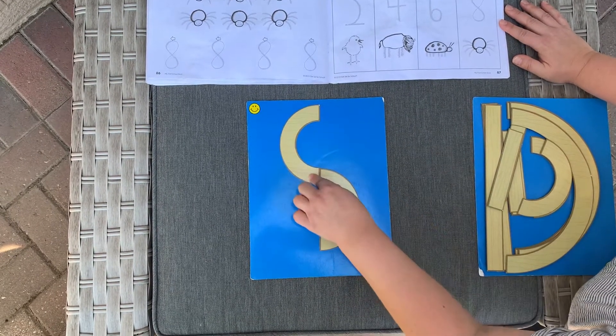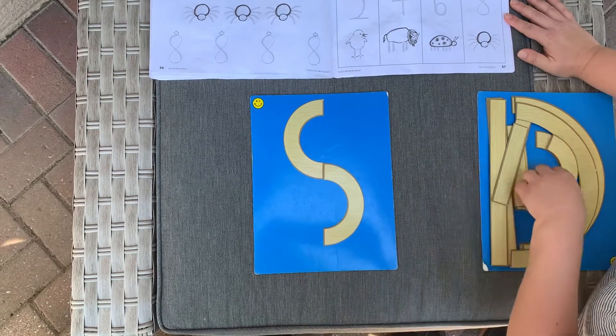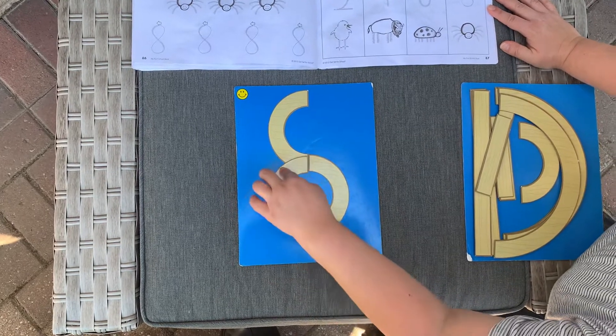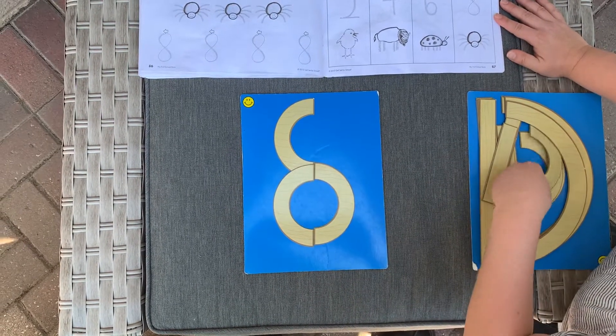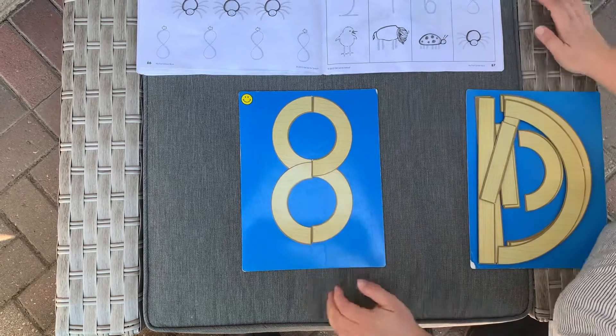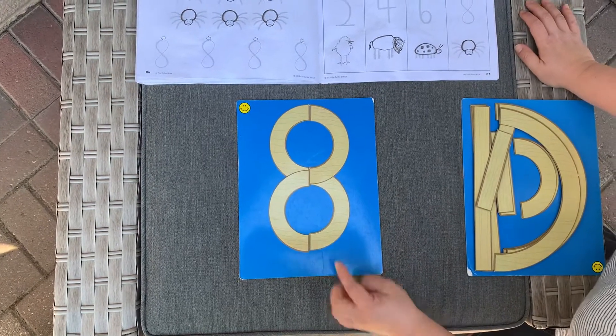Little curve one way, little curve the opposite way. And what do we have? A number eight.